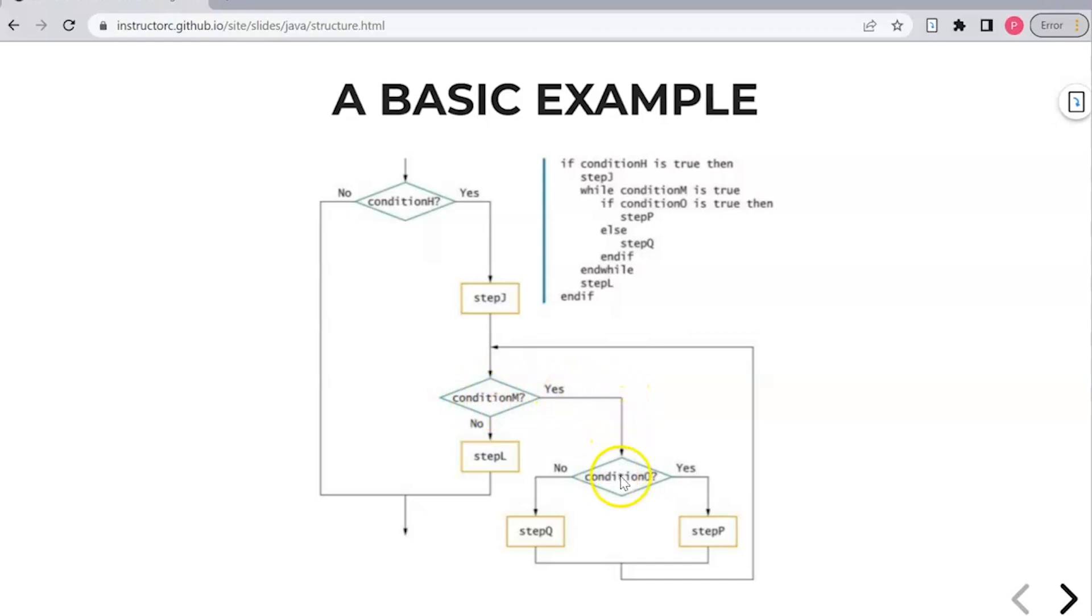We're going to go down and do a dual alternative selection structure. If condition O is true, yes, do sequence step P. If condition true is not true, then we do the alternative, which is going to be step Q, which is a sequence structure. But then it continues to ask the question over and over until this condition M is met. Once this condition is met or once it's not met, then you go down to step L. And then you go back to the overall structure and you exit. So you'll see more, you'll see all three structures at play here.